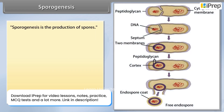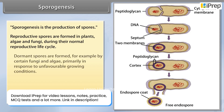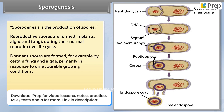Sporogenesis is the production of spores. Reproductive spores are formed in plants, algae, and fungi during their normal reproductive life cycle. Dormant spores are formed, for example, by certain fungi and algae, primarily in response to unfavorable growing conditions.